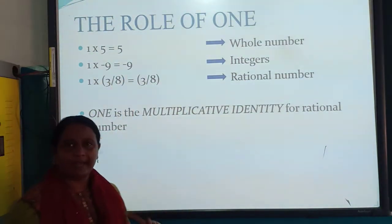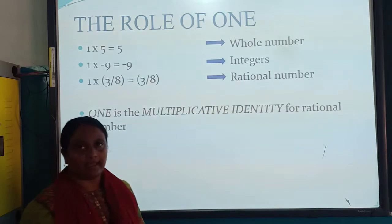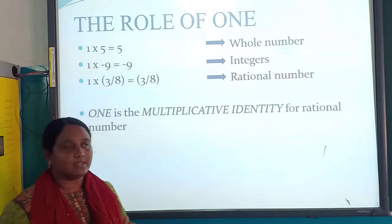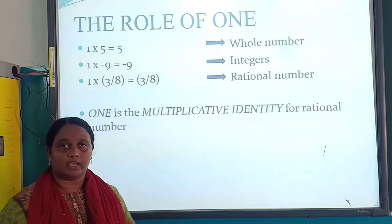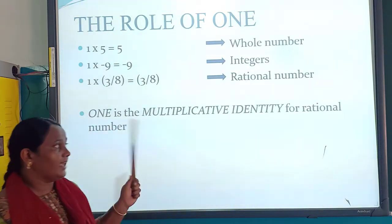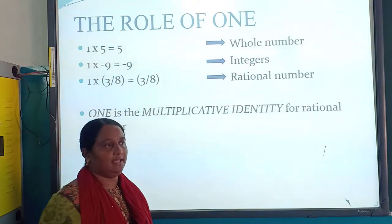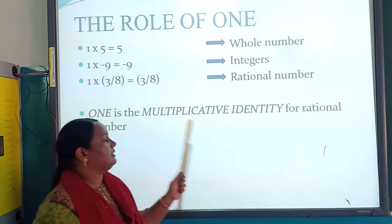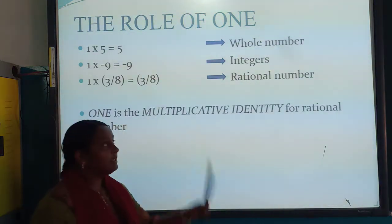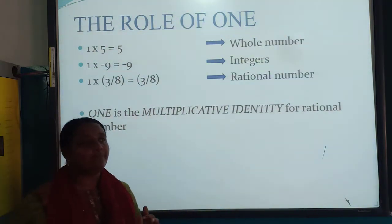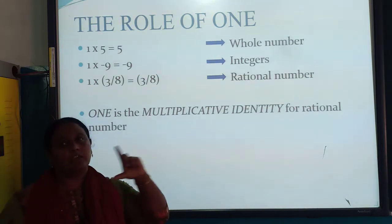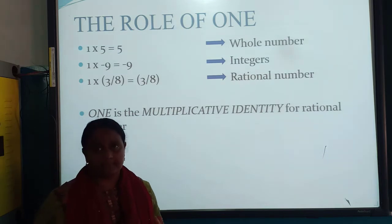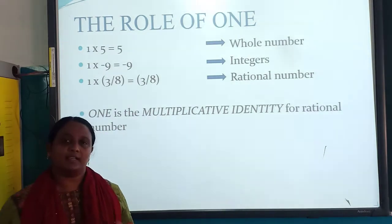Next is the role of 1. When I multiply 1 × 5 = 5, and 1 × (−3/8) = −3/8, multiplying any rational number by 1 produces no change. So we can identify that 1 is the multiplicative identity for rational numbers. These are all the properties we are covering, and now we will go through the detailed worked examples for the associative property.